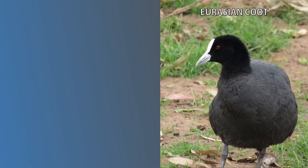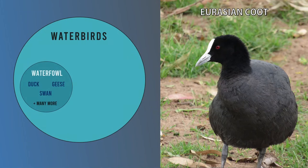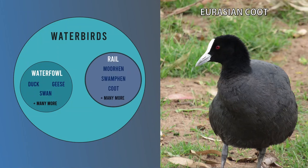The term 'water bird' is a broad common name used to categorize any bird that lives in or around the water. This group contains many subgroups called families. One family you're probably familiar with is waterfowl, which consists of ducks, swans, and geese. The three species we'll be covering today are in a different family known as the rails. Australia has many other rails, but these three are by far the most common.